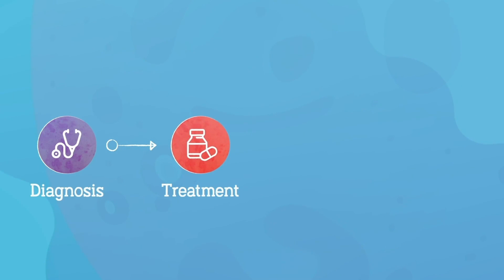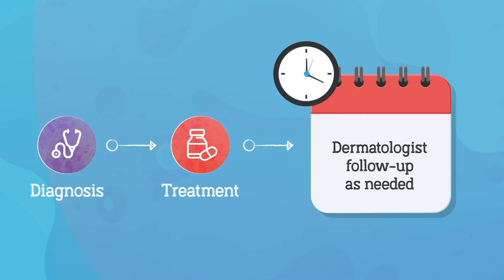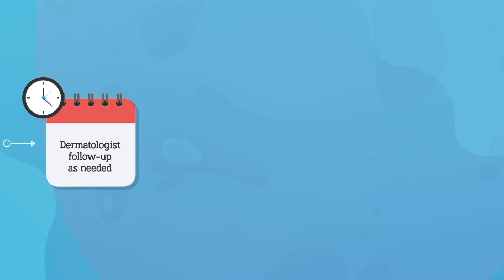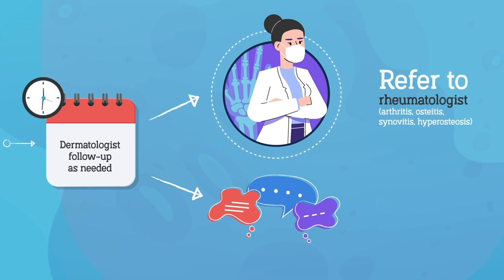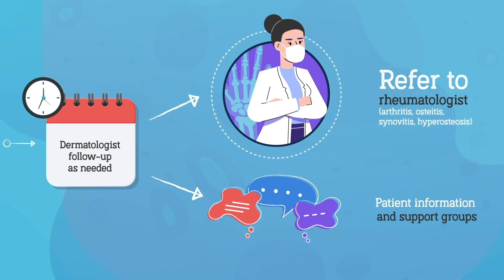Once treatment is underway, individuals with any subtype of pustular psoriasis should see their dermatologist regularly for follow-up. Other specialists may also be required, such as a rheumatologist to monitor any related joint and/or bone disease. Individuals may also benefit from receiving appropriate educational information on pustular psoriasis and referral to pustular psoriasis support groups.